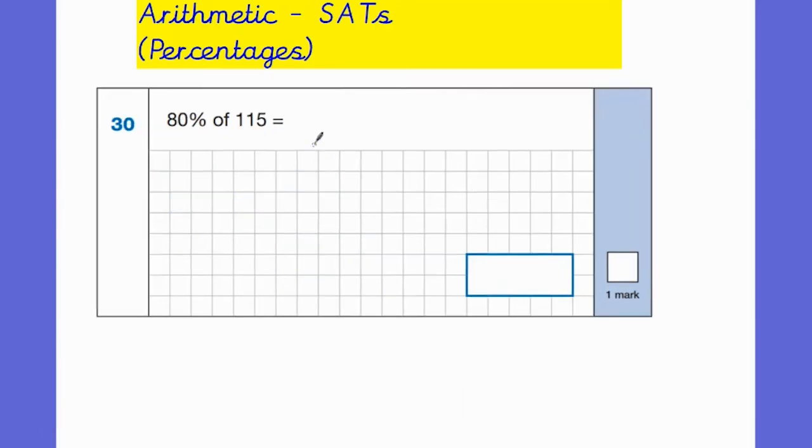So another question, this came up in the 2022 paper: 80% of 115. So I'm going to go back to the method that I showed you to begin with, which is how I would ask the children to solve this question. So I'm going to do 80 times 115. 5 times 0 is 0. 1 times 0 is 0. 1 times 0 is 0.